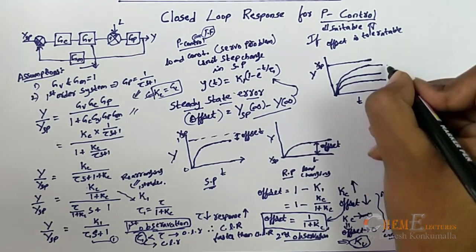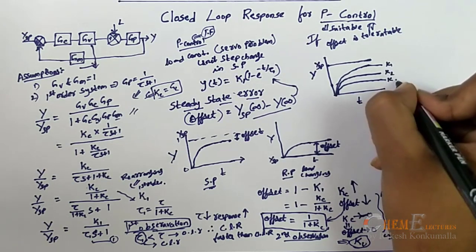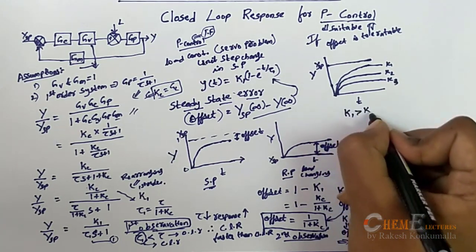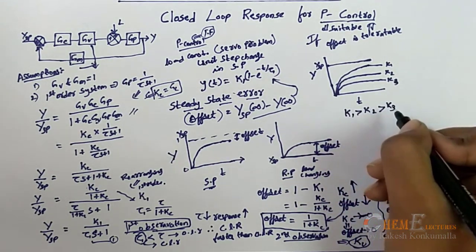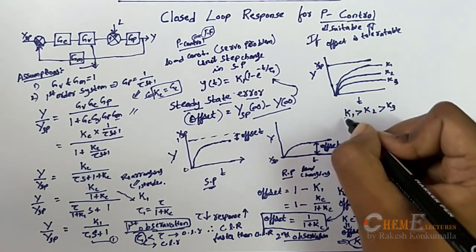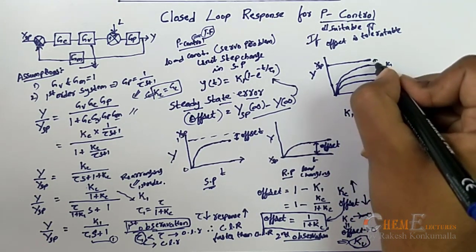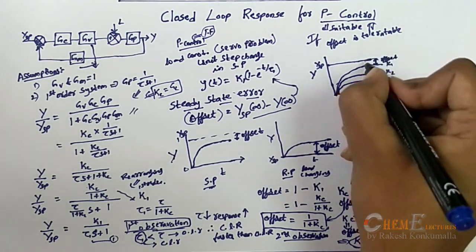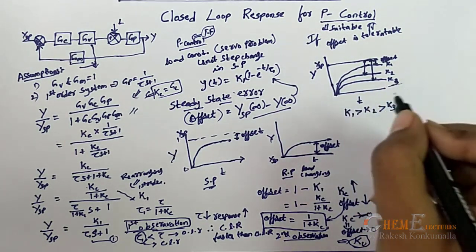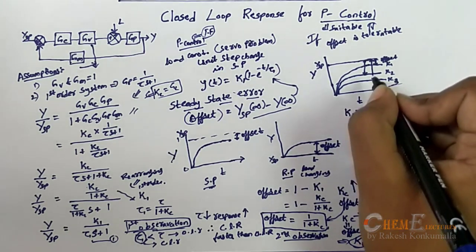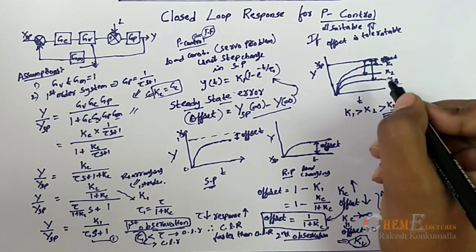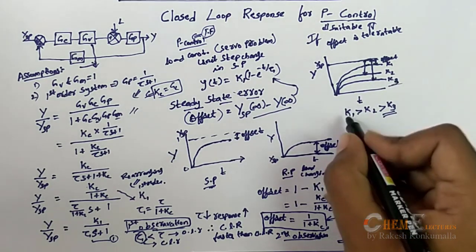Drawing the output response graph for different values of Kc — let K1 > K2 > K3 represent different controller gains. When Kc is larger (K1), the offset is smaller, and when Kc is smaller (K3), the offset is larger. By adjusting the value of proportional gain we can achieve a minimum offset, but we cannot eliminate the offset completely using a proportional controller.